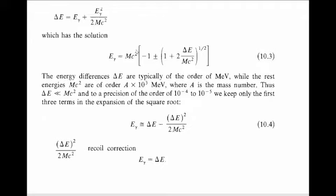The energy difference Delta E is typically on the order of MeV, while the rest mass energy Mc² is on the order of A × 10³ MeV. Since Delta E is very small compared to Mc², we take only the first two terms of the expression and neglect higher terms, giving: E_gamma = ΔE - ΔE² / (2Mc²). This correction is known as the recoil correction.